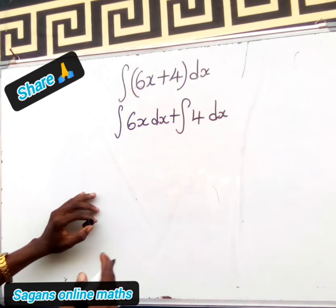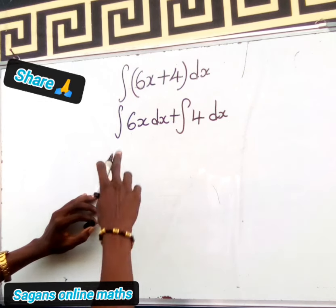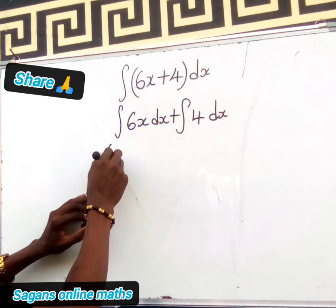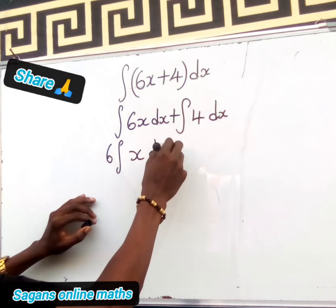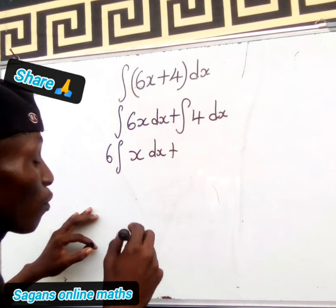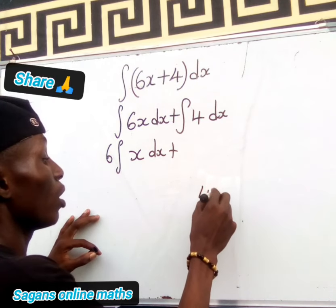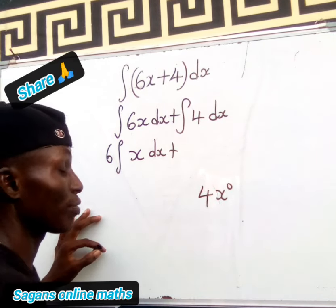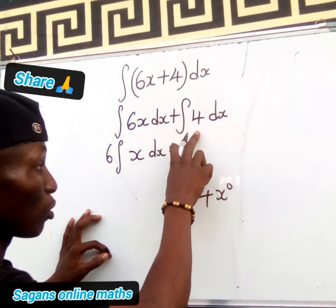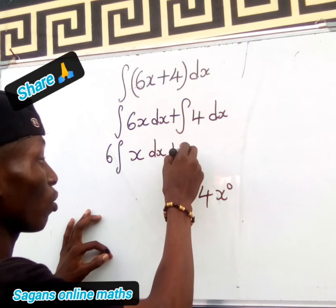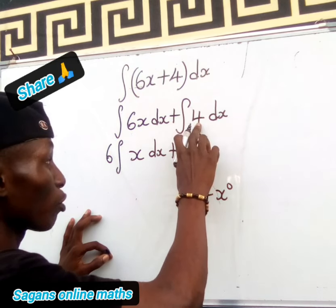My second step: I'm going to isolate the coefficient of x, which is 6. So now this is 6 times the integral of x dx plus 4 times the integral of dx. Now you know that 4 can also be seen as 4x to the power of 0, because anything to the power of 0 is 1, and 1 times 4 is still 4.